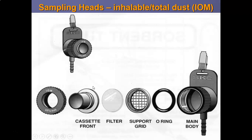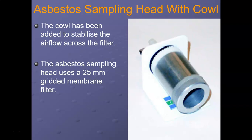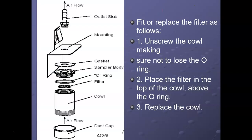The cowl has been added to stabilize airflow across the filter. The asbestos sampling head uses a 25-millimeter gridded membrane filter. The electrically conducting cylindrical cowl extends between 33 and 43 millimeters in front of the filter, directing asbestos particles onto the filter. The cowl acts as a guide to collect those asbestos particles onto the filter.